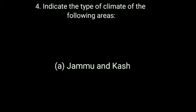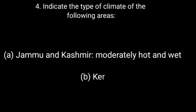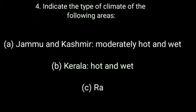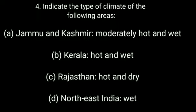Next question: Indicate the type of climate of the following areas. First, Jammu and Kashmir — moderately hot and wet. Next, Kerala — hot and wet. Next, Rajasthan — hot and dry. Next, North East India — wet.